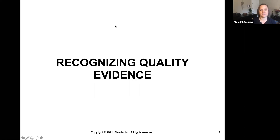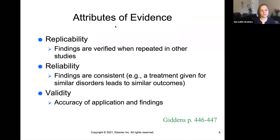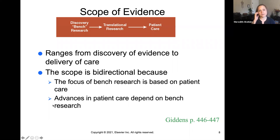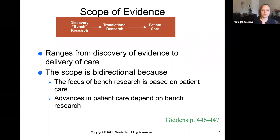In order to practice evidence-based nursing, you have to know what's good quality evidence — how do you find a study with valid results? There are a couple of kinds of research: bench or discovery research is done at the molecular or cellular level in a lab, while translational research asks what this means at the bedside and how it impacts patient care. This scope can go both ways — sometimes we notice something at bedside and then research why it's working or not.